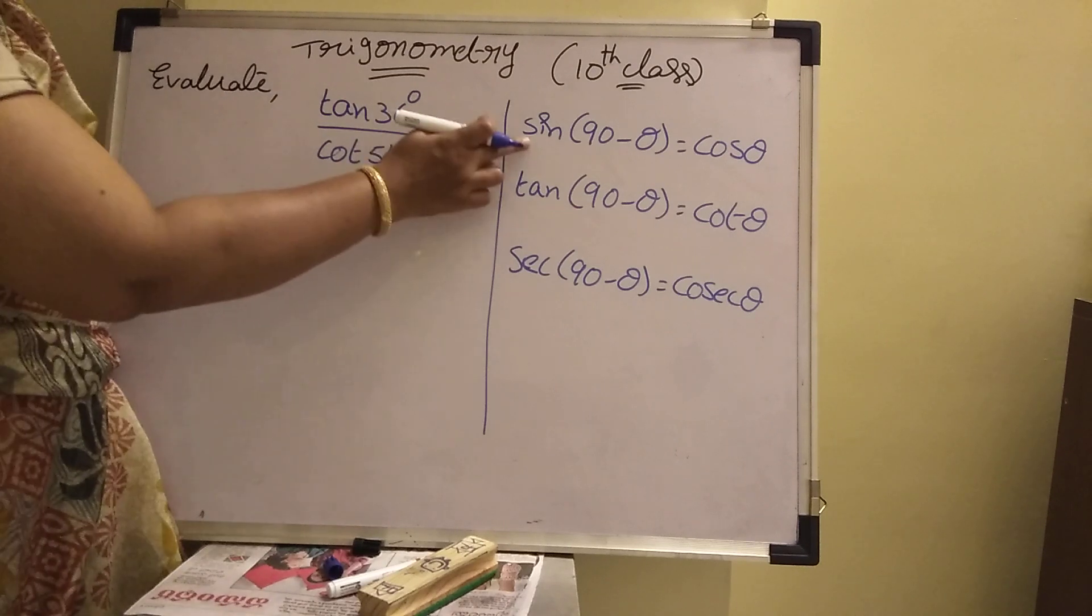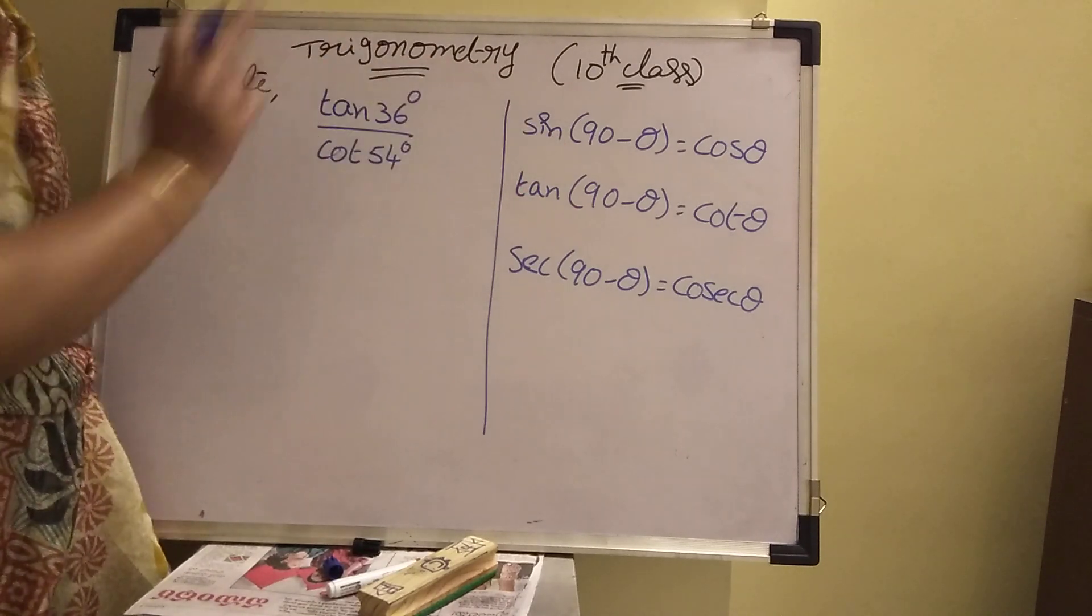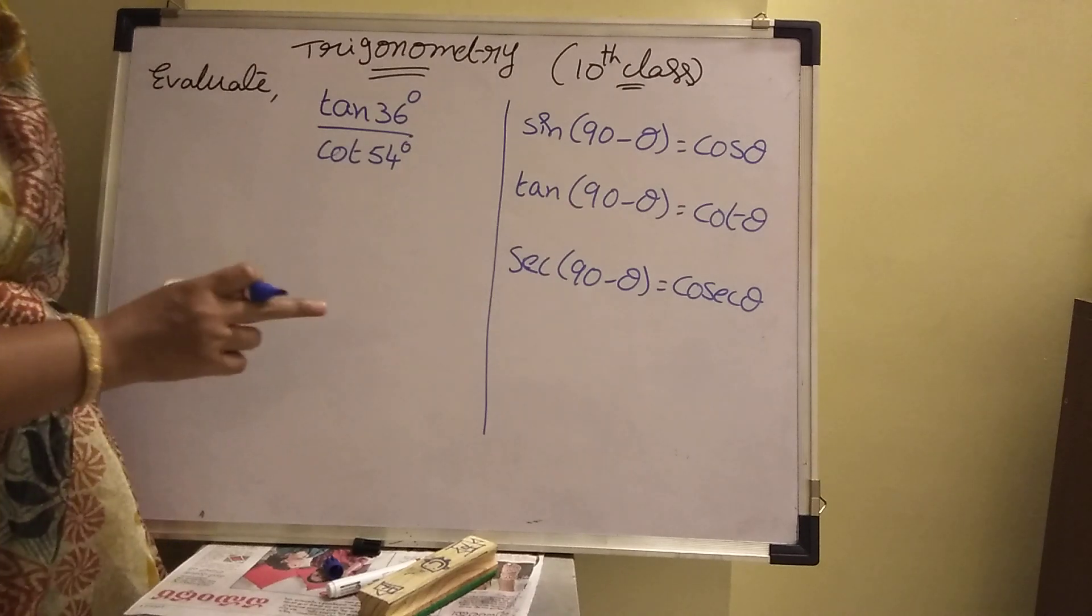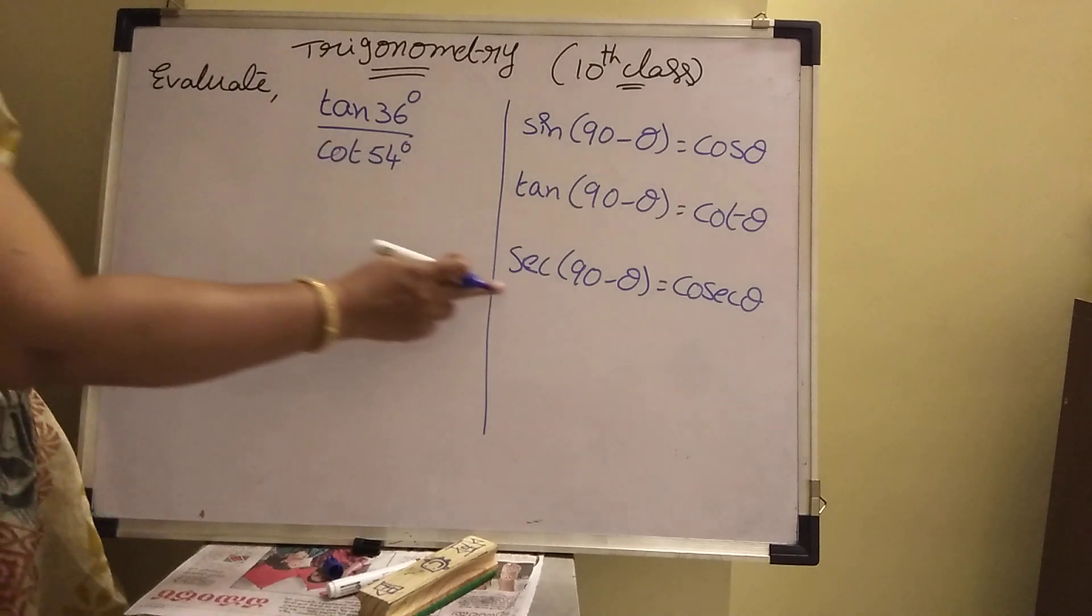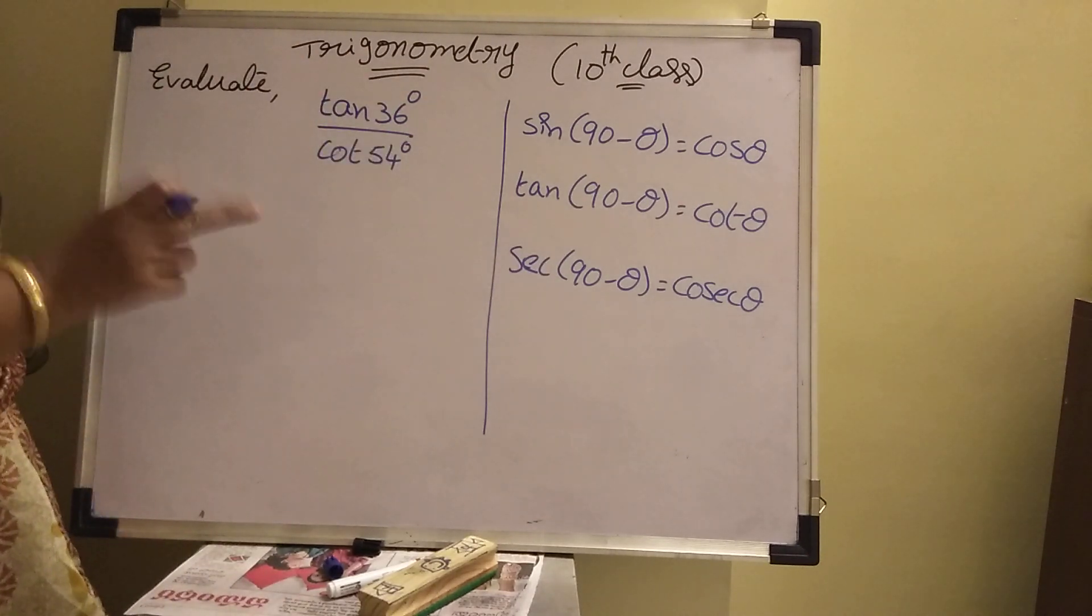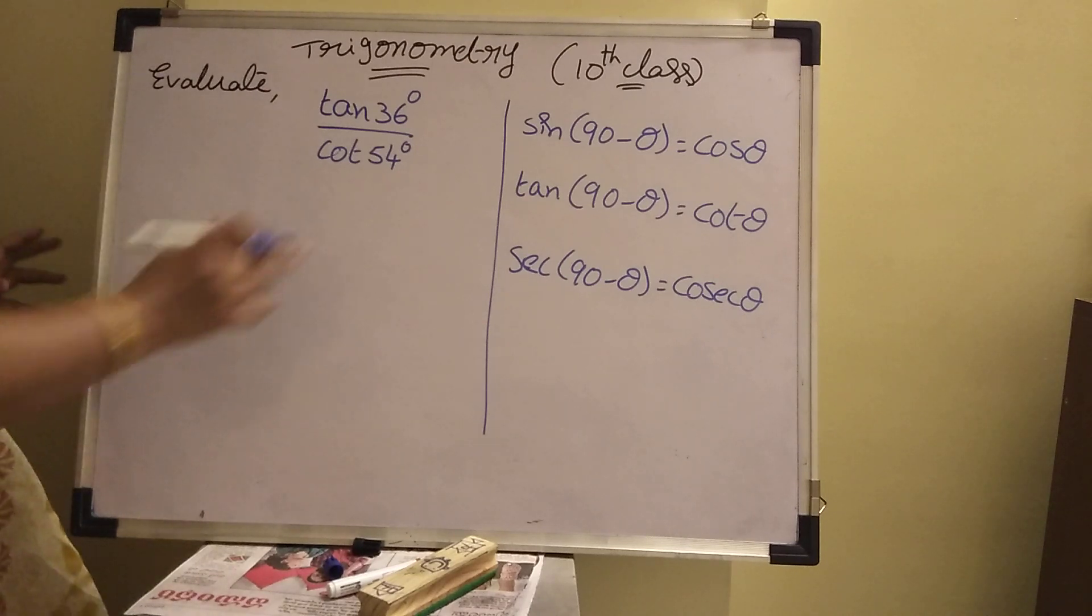See, I am recalling here sine of 90 minus theta is cos theta, tan of 90 minus theta is cot theta, secant of 90 minus theta is cosec theta. This is very important.